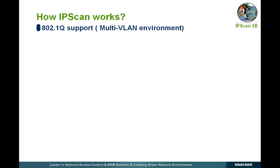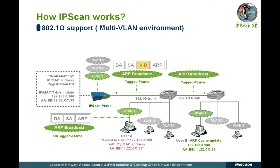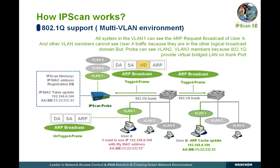As IP scan supports the 802.1Q trunk port, it can use the port to manage IPs in the applicable range according to the VLAN range. For example, a user in VLAN 3 can communicate only with users within the VLAN 3 range. IP scan supports the 802.1Q range and manages all users according to the VLAN network, helping the administrator make the right decision for an optimal configuration for the entire corporate network.